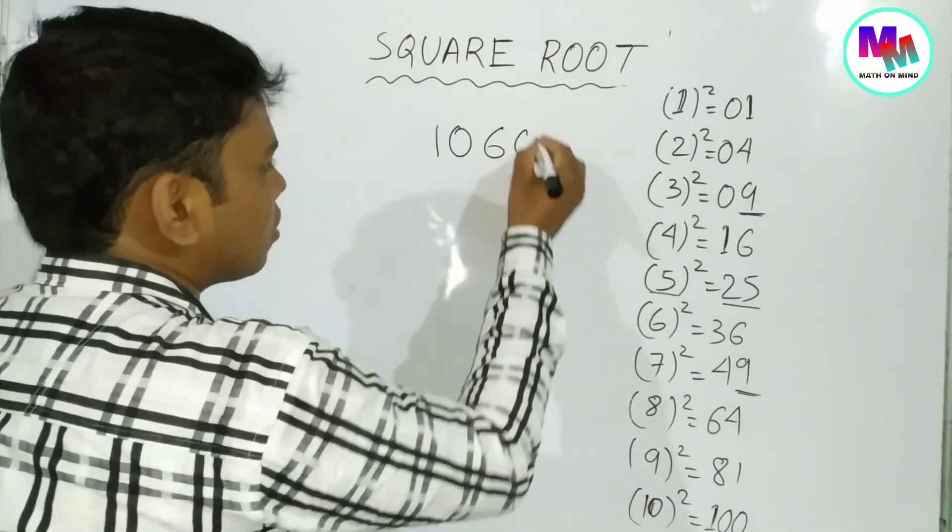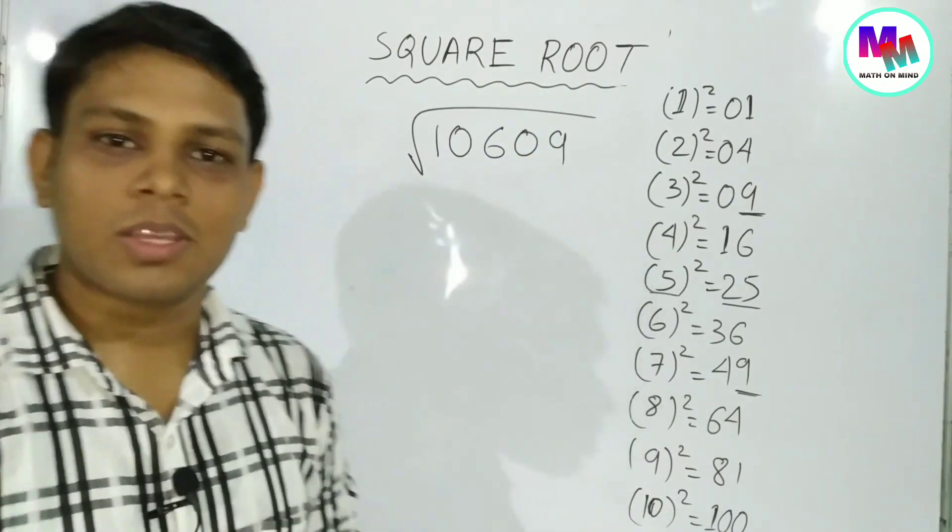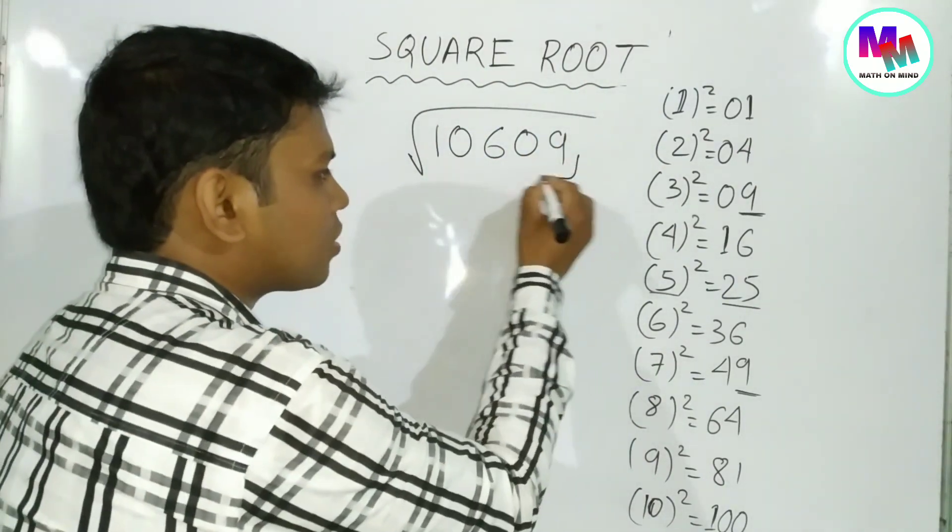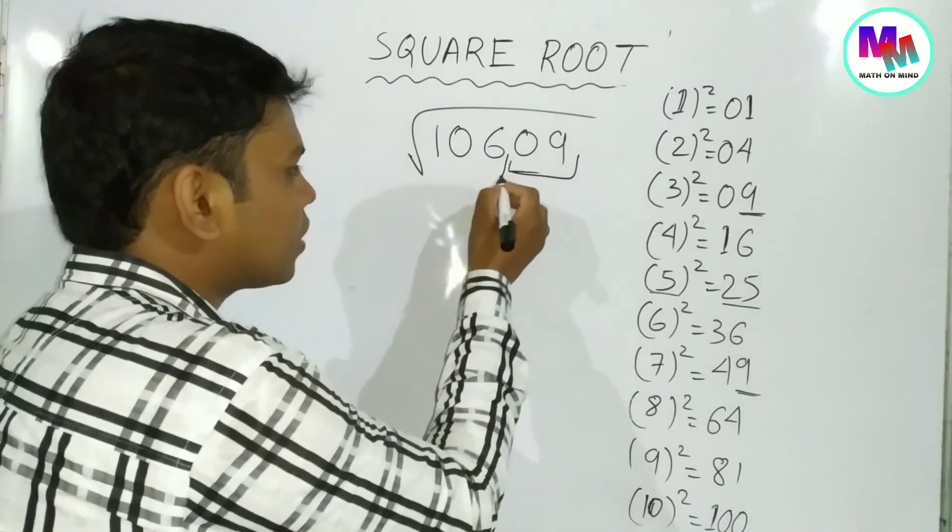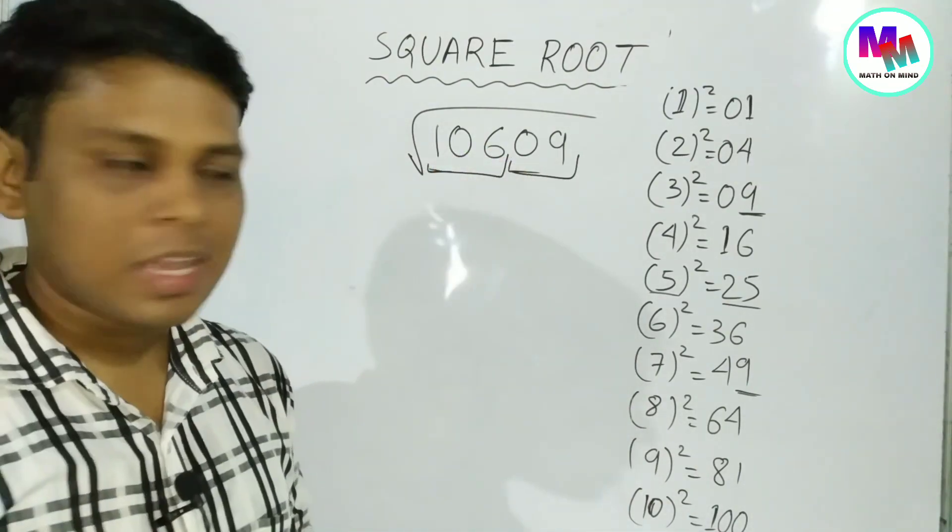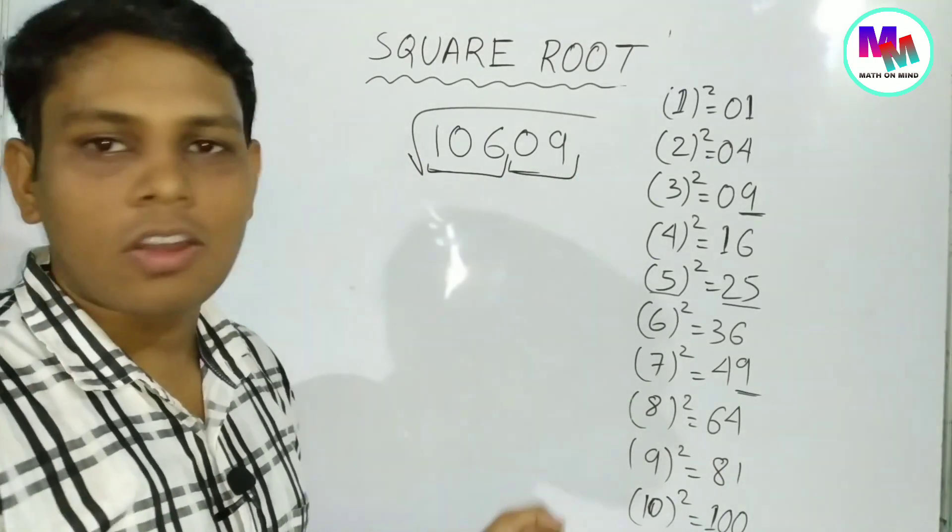Now let's go to another problem. We'll work through this example. Taking a different number, we apply the same method we just learned to find its square root.